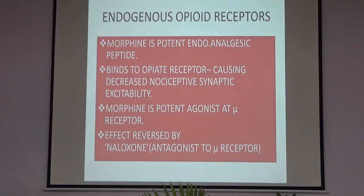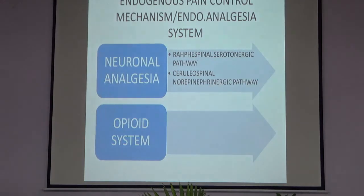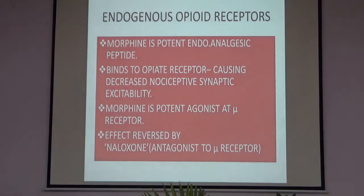The opioid system: the endogenous opioid system acts through opioid receptors. Morphine is a potent analgesic peptide which binds to opioid receptors, causing decreased nociceptive synaptic excitability. Morphine is a potent agonist to mu receptors — this is important as an MCQ. They act presynaptically and postsynaptically to inhibit transmission from A-delta and C fibers. They increase calcium conductance of the postsynaptic membrane and inhibit release of substance P, causing presynaptic inhibition as well. The effect of morphine is reversed by naloxone, which is an antagonist to mu receptors and can be used in cases of morphine overdose. This was all about pain physiology, pathways, and the pain control mechanisms — neuronal analgesia and the opioid system. In the next class, we will talk about sensory cortex and sensory abnormalities as well as spinal cord lesions. Thank you so much for today's class.